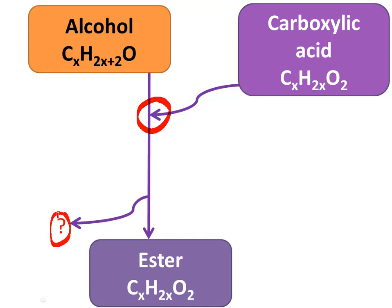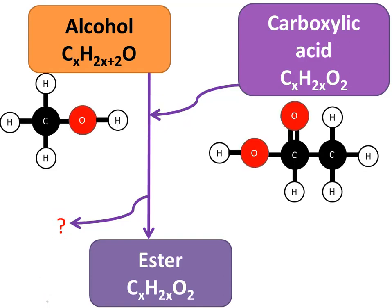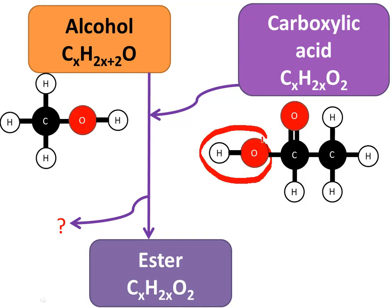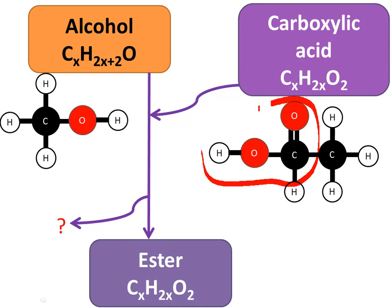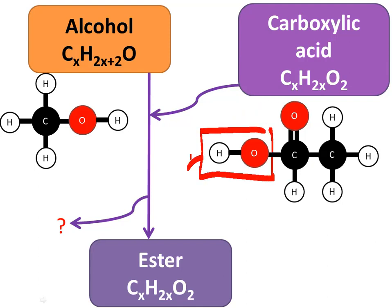In case you didn't catch it, here's another way of seeing this. We have the carboxylic acid with the C bonded by a double bond to the O — the carbonyl group — which is part of the carboxylic functional group. And here is the hydroxyl group, which is also part of the carboxylic functional group. This part comes off.